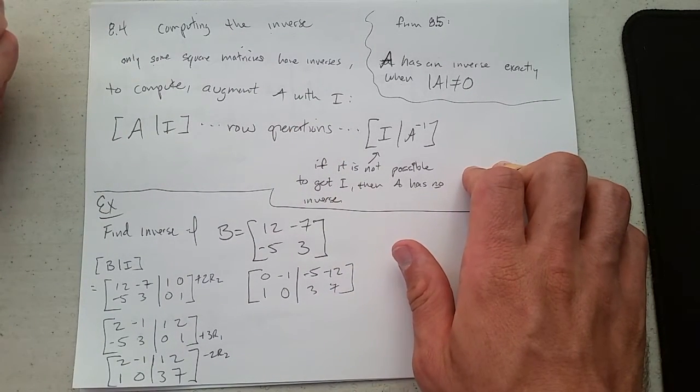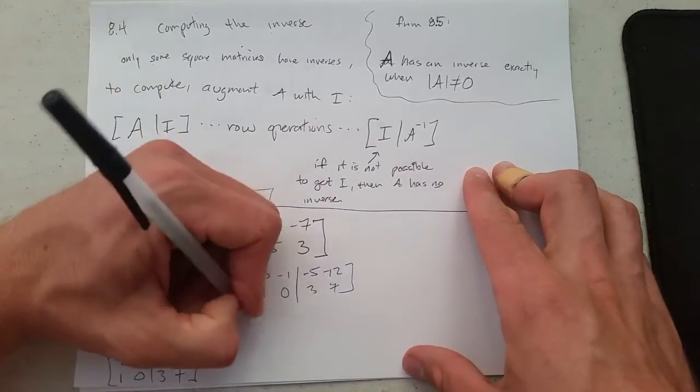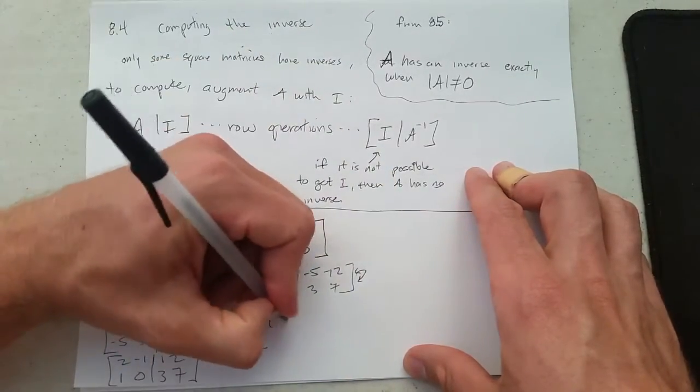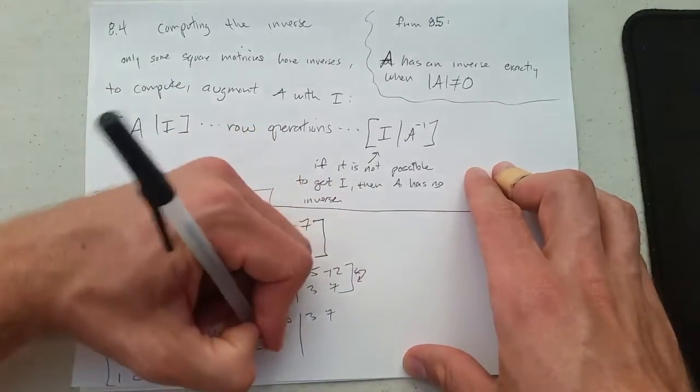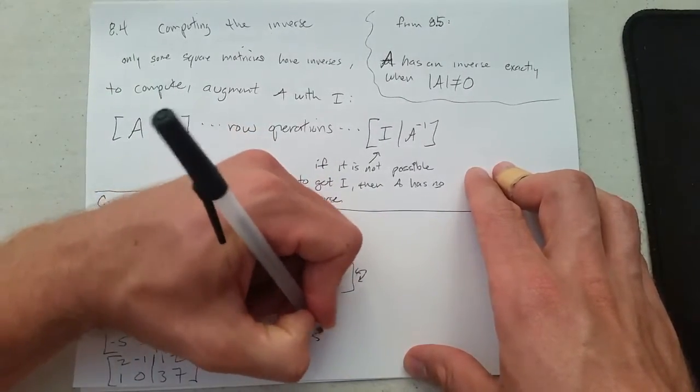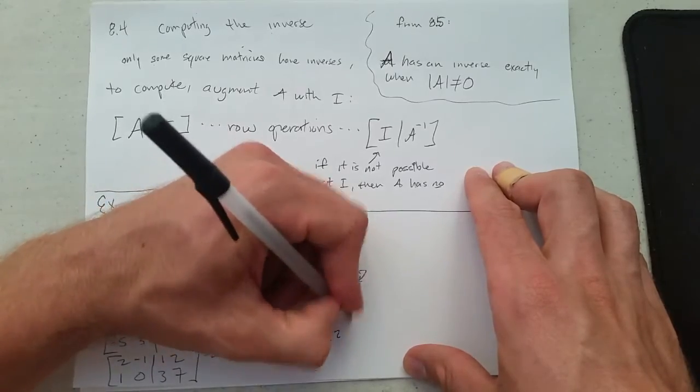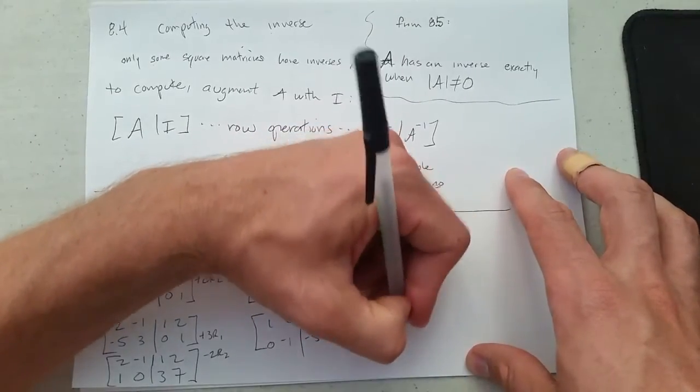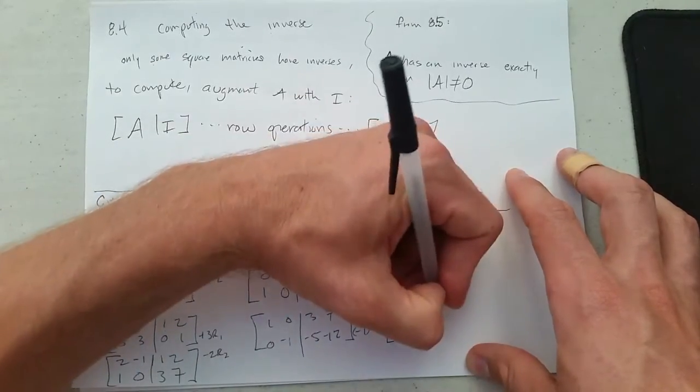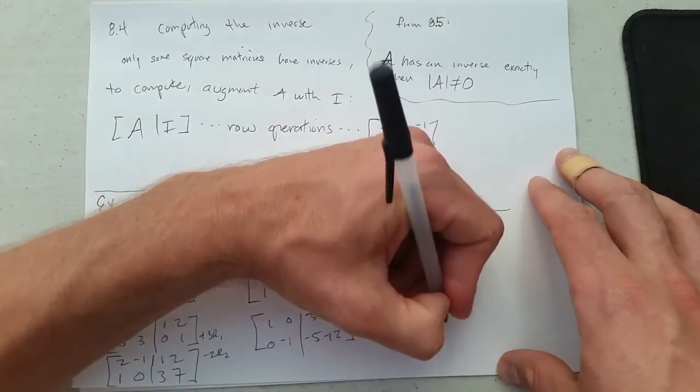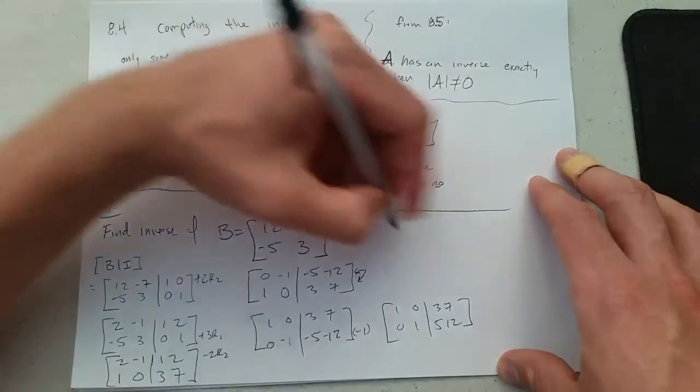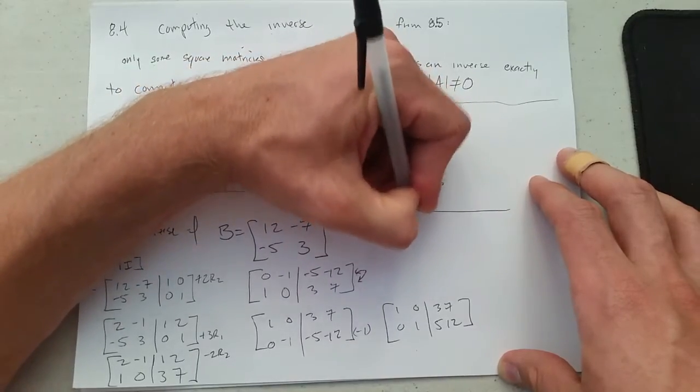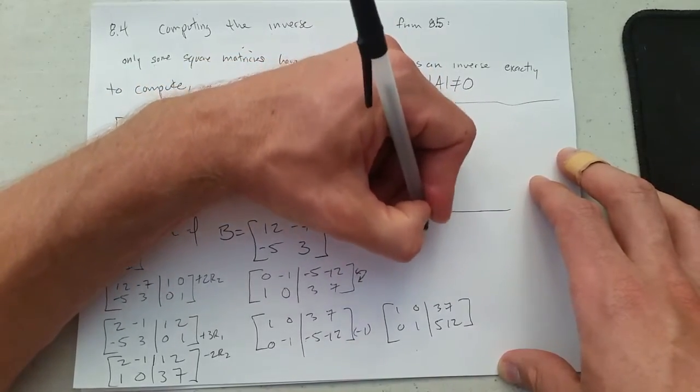All right, so we're almost there. We need a row swap and then multiply by negative 1. So here is our row swap: 1, 0, 3, 7, 0, negative 1, negative 5, negative 12. And then multiply by negative 1, and we're going to end up with 3, 7, 5, 12. So we think B inverse should be 3, 7, 5, 12.